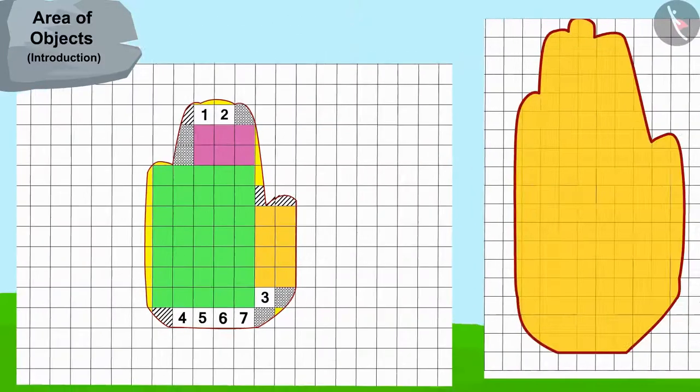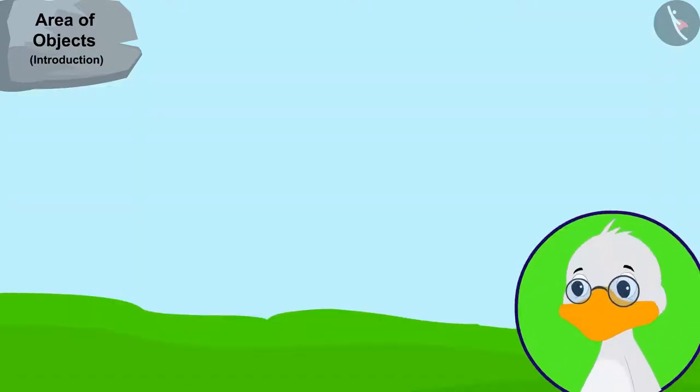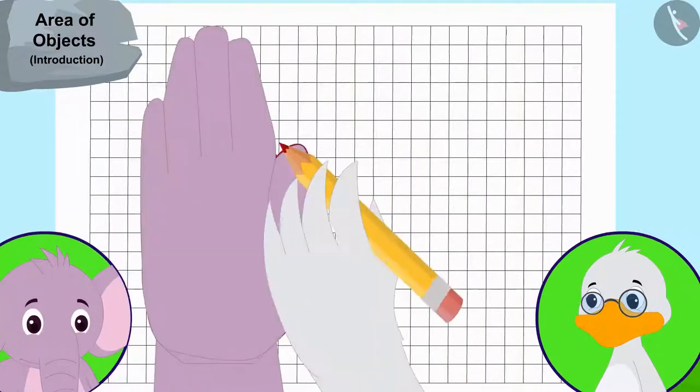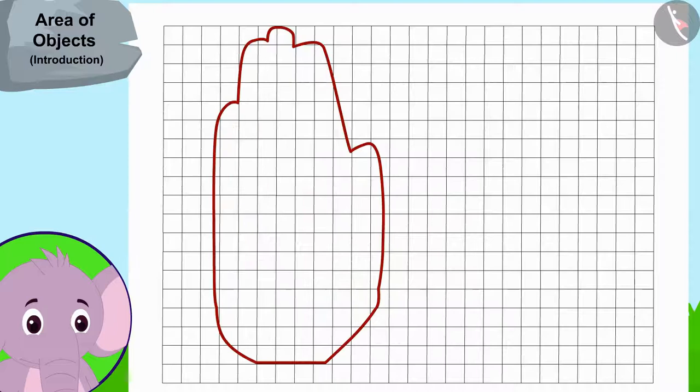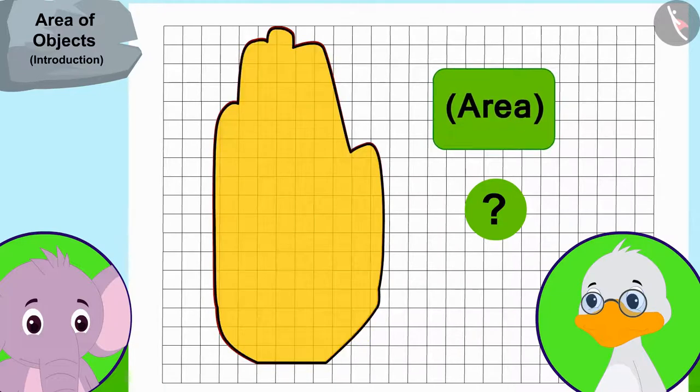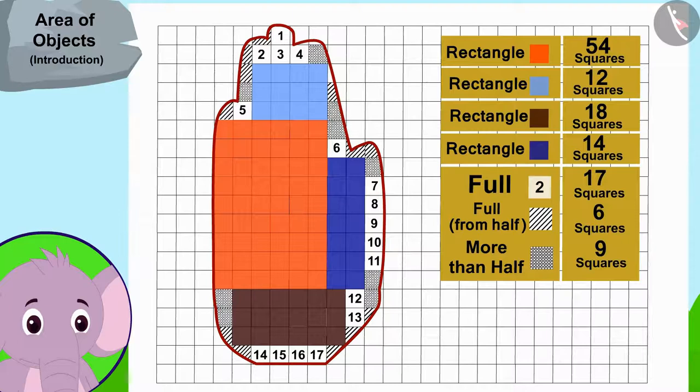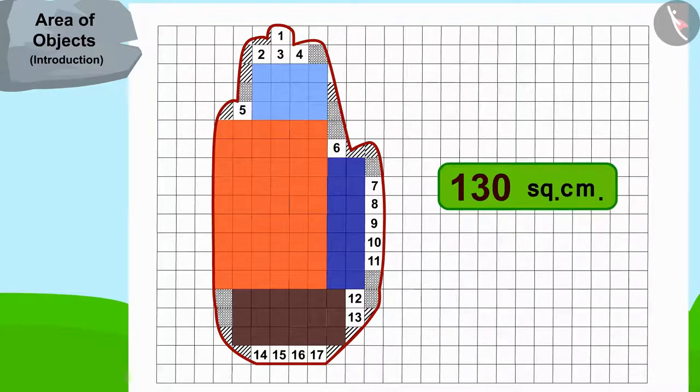But this is not the same as the hand impression on the door. So uncle continued his search and now traced Appu's hand. Children, the impression of Appu's hand is shown here. Can you find the area of Appu's hand by the process used by uncle? If you wish to, you may find it by stopping the video. You can also find the area of Appu's hand impression by making rectangles in this way. The area of Appu's hand impression is 130 square centimeters.